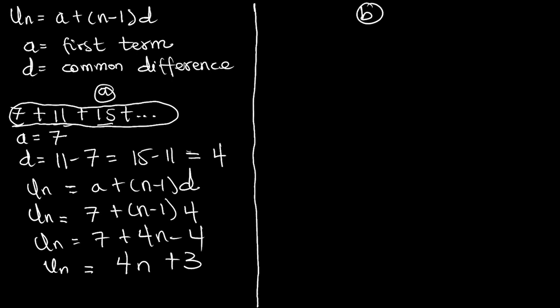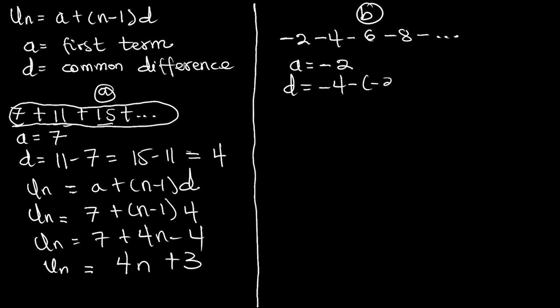Let's take another example. Consider the series: negative 2, negative 4, negative 6, negative 8, and so on. We are supposed to find the nth term of this particular series. Like we did for the first one, we find our first term and common difference. Our a is equal to negative 2. Our d is equal to negative 4 minus negative 2, which is negative 2. We can verify: negative 6 minus negative 4 also gives negative 2. So d is negative 2.